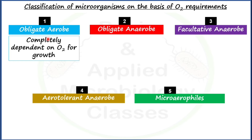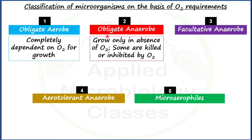That is why obligate aerobs are also called strict aerobs. Now, obligate anaerobs are those microorganisms which grow only in the absence of oxygen — they are just opposite to obligate aerobs. Some obligate anaerobs are even killed or inhibited by oxygen, meaning oxygen is toxic to them. They are also called strict anaerobs.